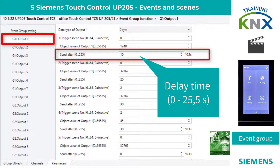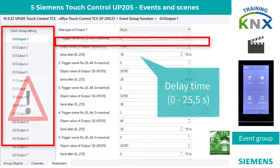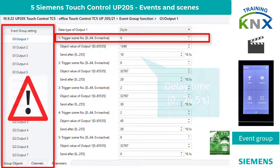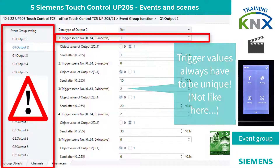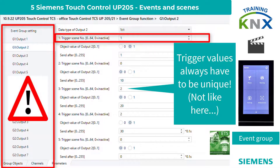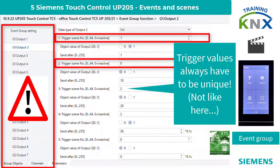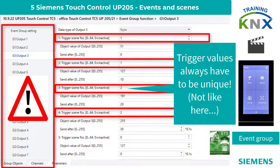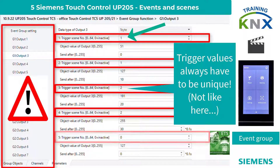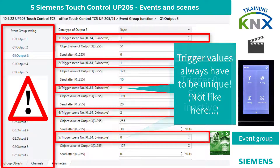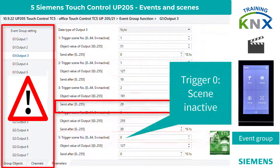Important: in order to call up all 8 different values for an output, the triggers must be defined with different values. If trigger values within an output are equal, only the first of them is sent. At 0, the entries are inactive.